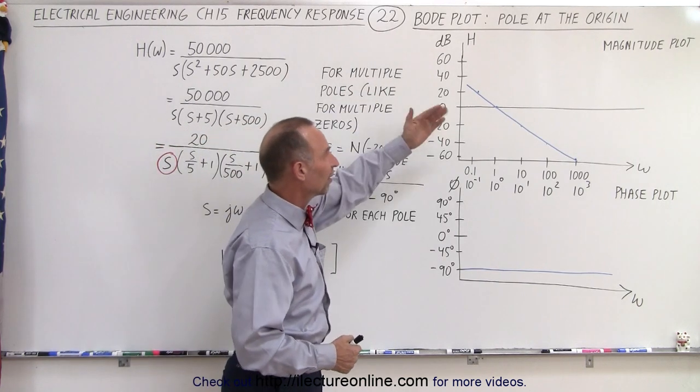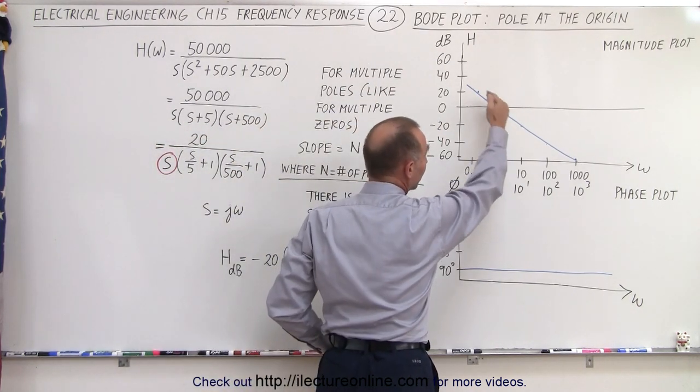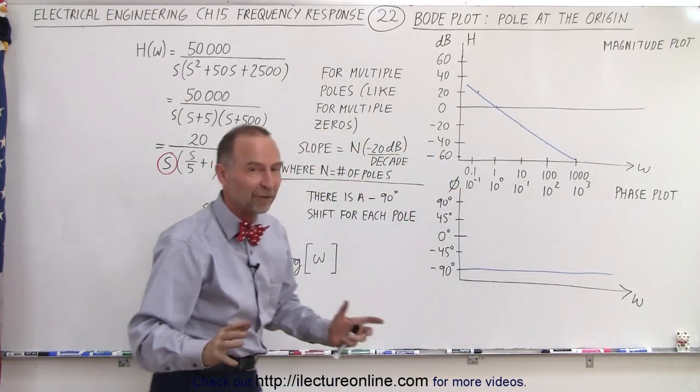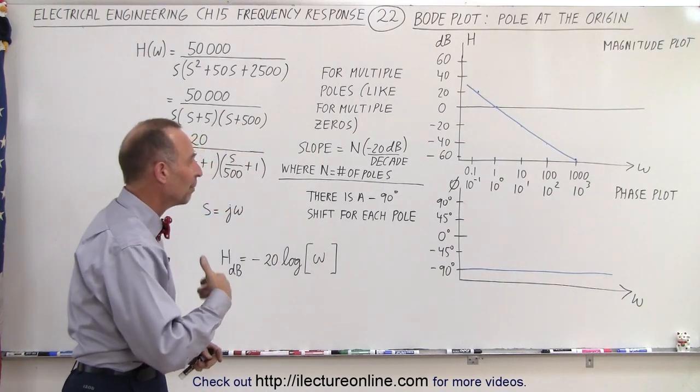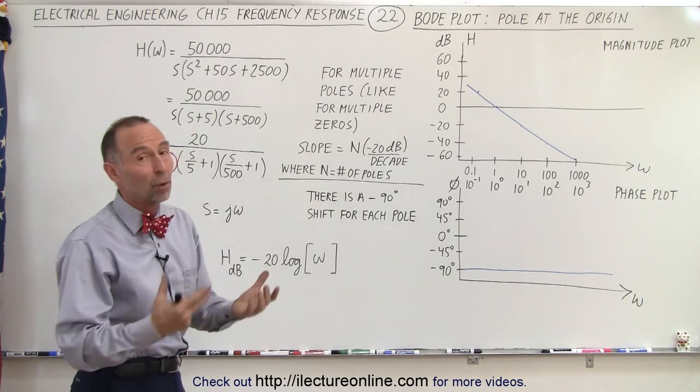The slope is negative instead of positive. It's still 20 dB per decade, but in a negative direction. The phase angle is minus 90 degrees constant for every value of omega instead of positive 90 degrees. So there's a minus 90 degree shift for each pole.